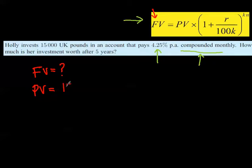Then we have r, which obviously stands for the rate, and that rate is 4.25%. And then this letter n is the power, is how many years she's going to invest it for, and that's for five years.